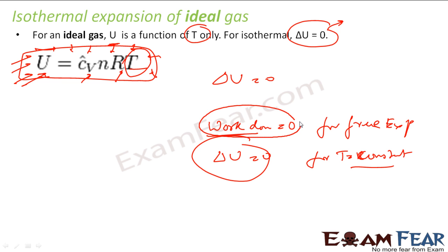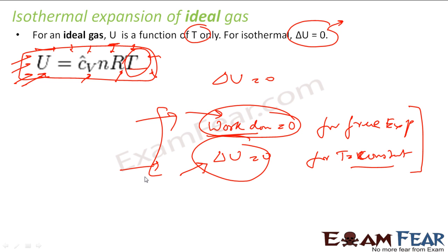For free expansion, work done is zero — but I am not saying internal energy change is zero. There may be heat exchange, and the internal energy can change. Work done is zero for free expansion, and internal energy change is zero for isothermal. It can be a little confusing, but they are two different things. For free expansion, W=0 because P_external=0. For isothermal, delta U=0 because internal energy is a function of T.